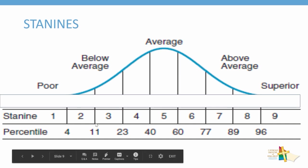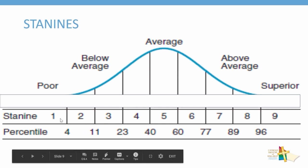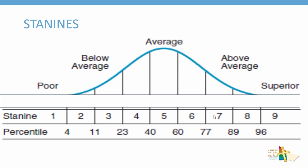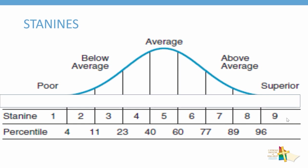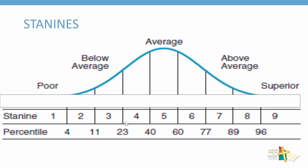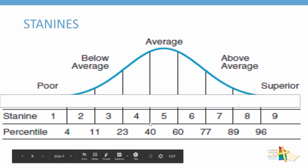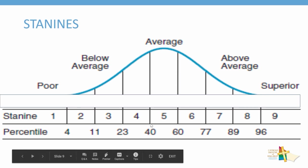Stanine 2 goes from the 4th percentile to the 11th. Stanine 3 from the 11th to the 23rd. So children achieving in stanines 1, 2, and 3 are achieving in the bottom 23% — the bottom quartile. Stanine 4 is particularly interesting as it moves from the 23rd percentile to the 40th, so a child at the bottom end of stanine 4 could be at the 24th percentile, and at the top end at the 40th percentile — quite a range. Similarly, stanine 5 goes from the 40th to the 60th percentile, which is also quite wide.